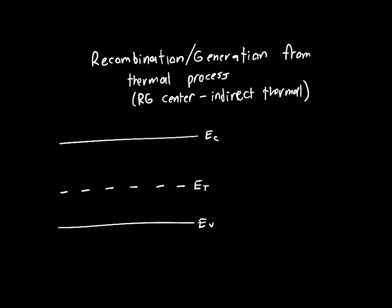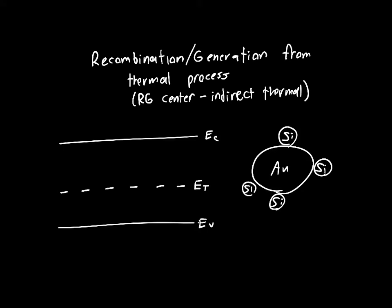Traps are caused typically by imperfections in the silicon lattice. For example, we might have a large atom of gold sitting where we want an atom of silicon, and that disrupts the lattice structure, creating these traps where there really shouldn't be any.